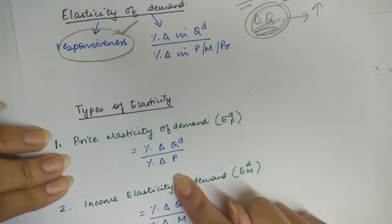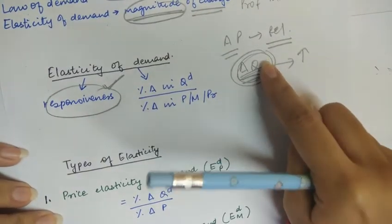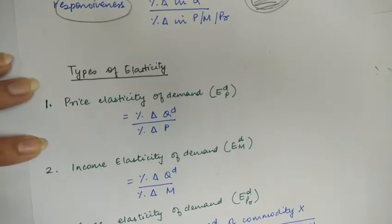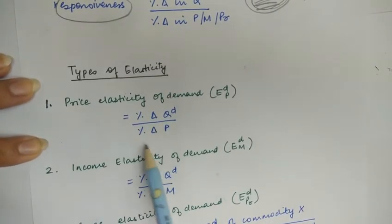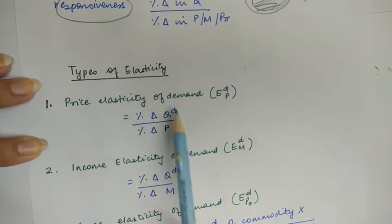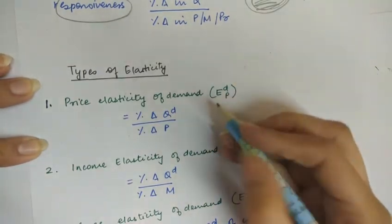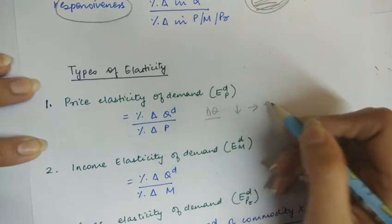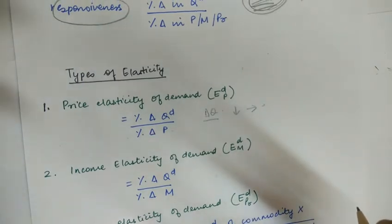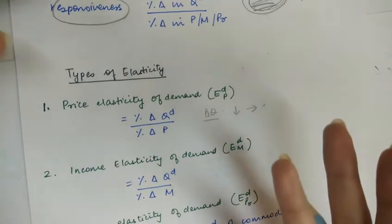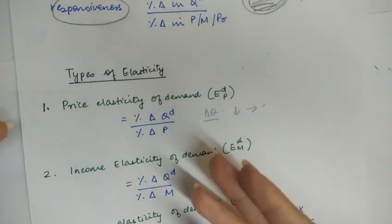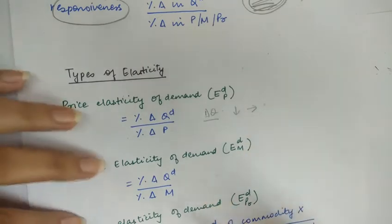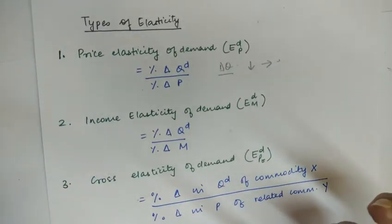First we will talk of price elasticity of demand. It shows the degree of responsiveness — the percentage change in quantity demanded due to a percentage change in price. It basically tells you how a change in the price of the commodity impacts the change in quantity demanded. If the change in quantity demanded due to a change in price is less, we call the demand less elastic. If the change in quantity demanded is more due to the change in price, we say the price elasticity of demand is high.